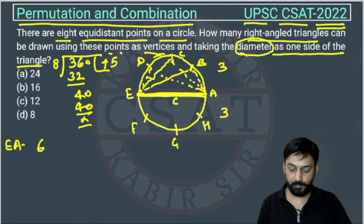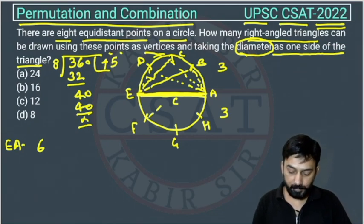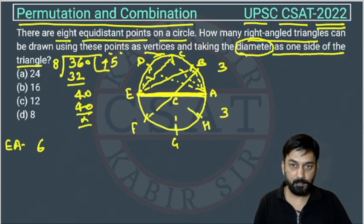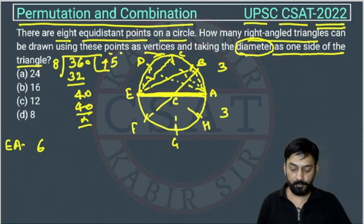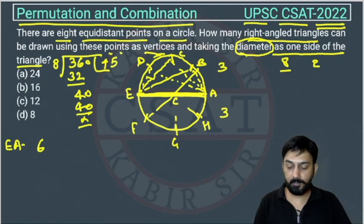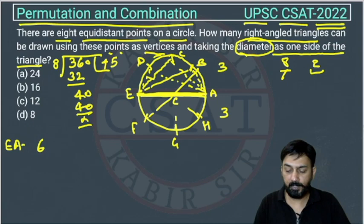Now, how many diameters can we have? One diameter is EA, another can be FB, another CG, and another DH — that gives us four diameters. Since we have a total of eight points and two points make one diameter, we can have four diameters.